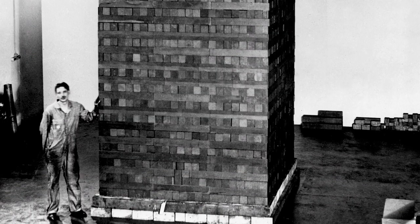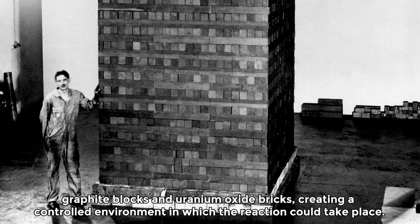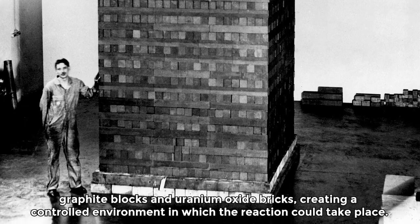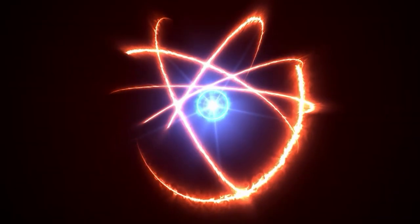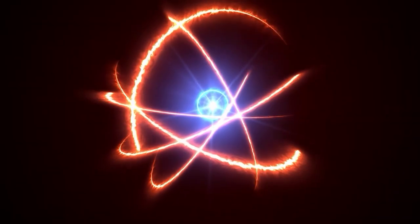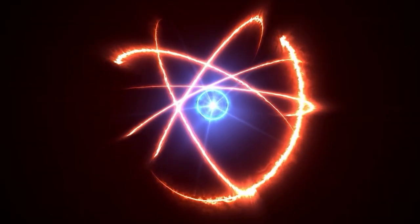Fermi and his team built a pile of graphite blocks and uranium oxide bricks, creating a controlled environment in which the reaction could take place. By adjusting the arrangement of the materials, they managed to achieve a controlled self-sustaining nuclear reaction.